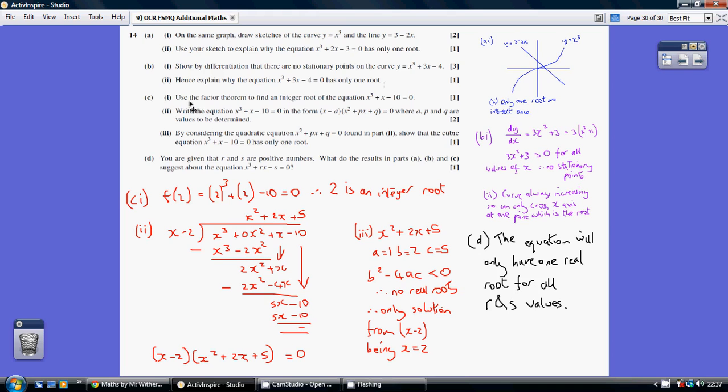Now, part C, use the factor theorem to find an integer. So in a way, we're just trialing an error here, so I think quite quickly you can see that if you choose 2, 2 cubed is 8, 8 plus 2 is 10, 10 take away 10 is 0. So f of 2 is 0, therefore 2 is an integer root. Now, this then throws up a factor for us, as 2 is a root, x minus 2 is a factor.